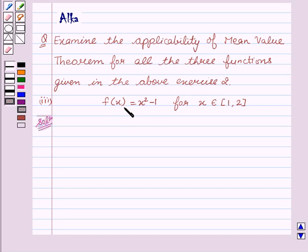Our function is f(x) equal to x square minus 1 for x being the element of closed interval [1, 2]. So let's start with the solution.